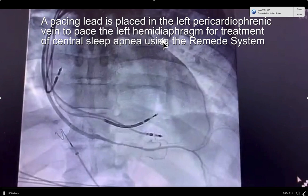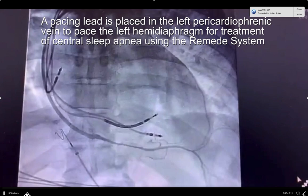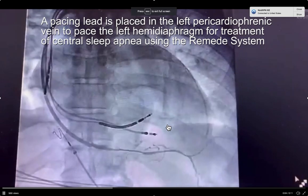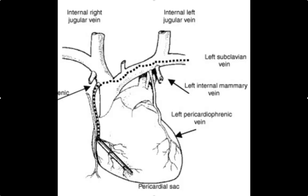A pacing lead is placed in the pericardiophrenic vein to pace the left hemidiaphragm for treatment of central sleep apnea using the remede system, which is recently approved by the FDA.